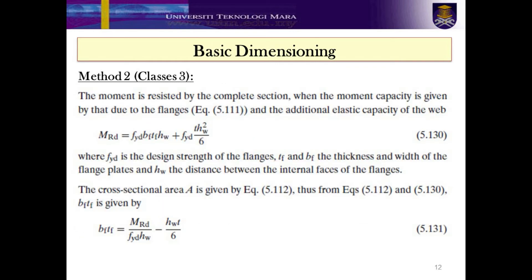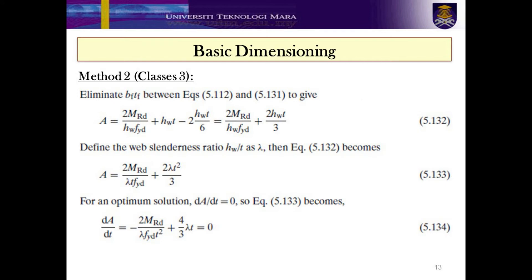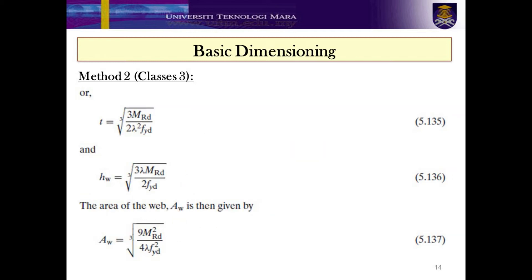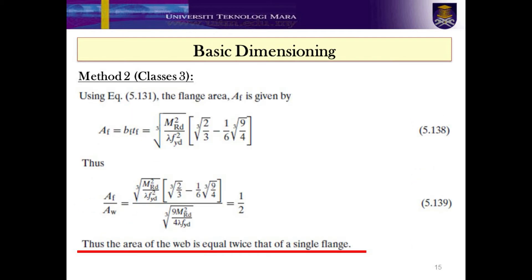However, if the moment satisfies the condition given in Equation 5.130, the basic dimensioning method shall follow Method 2 for Class 3. The area can be calculated as given in Equations 5.123, 5.133 and 5.134 respectively. Meanwhile, the thickness of web and height of web are given in Equations 5.135 and 5.136. The area of the web is given in Equation 5.137. Using Equation 5.131, the flange area is given by Equation 5.138. Thus, using Method 2 for a Class 3 section, the area of the web is equal to twice that of a single flange.